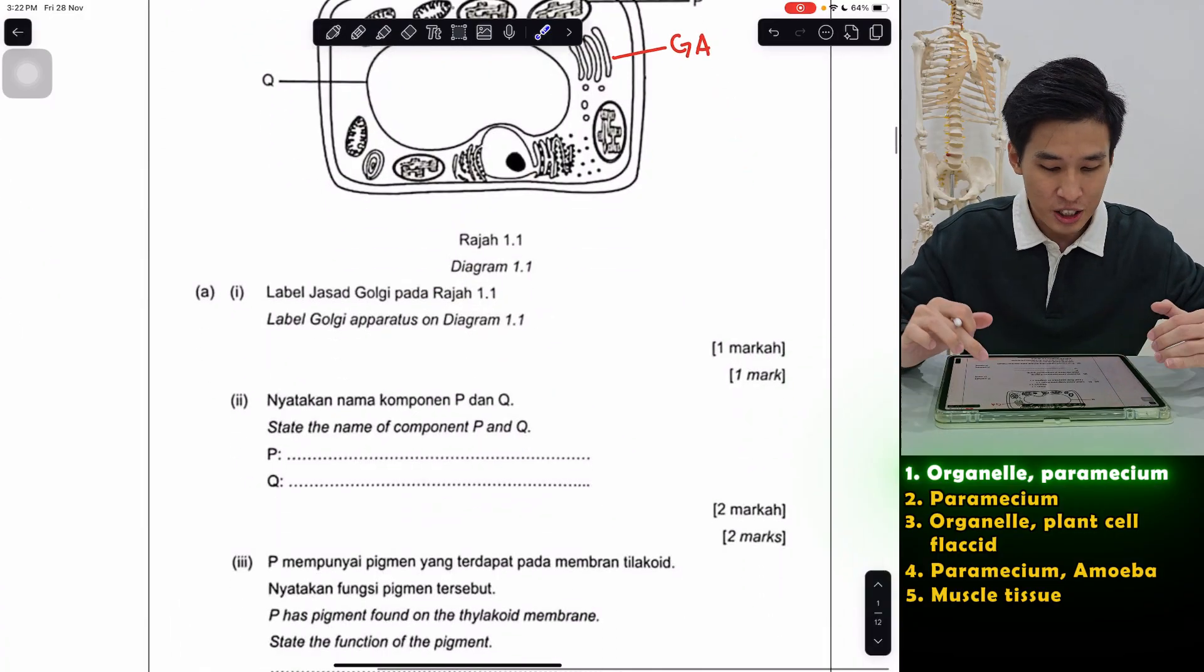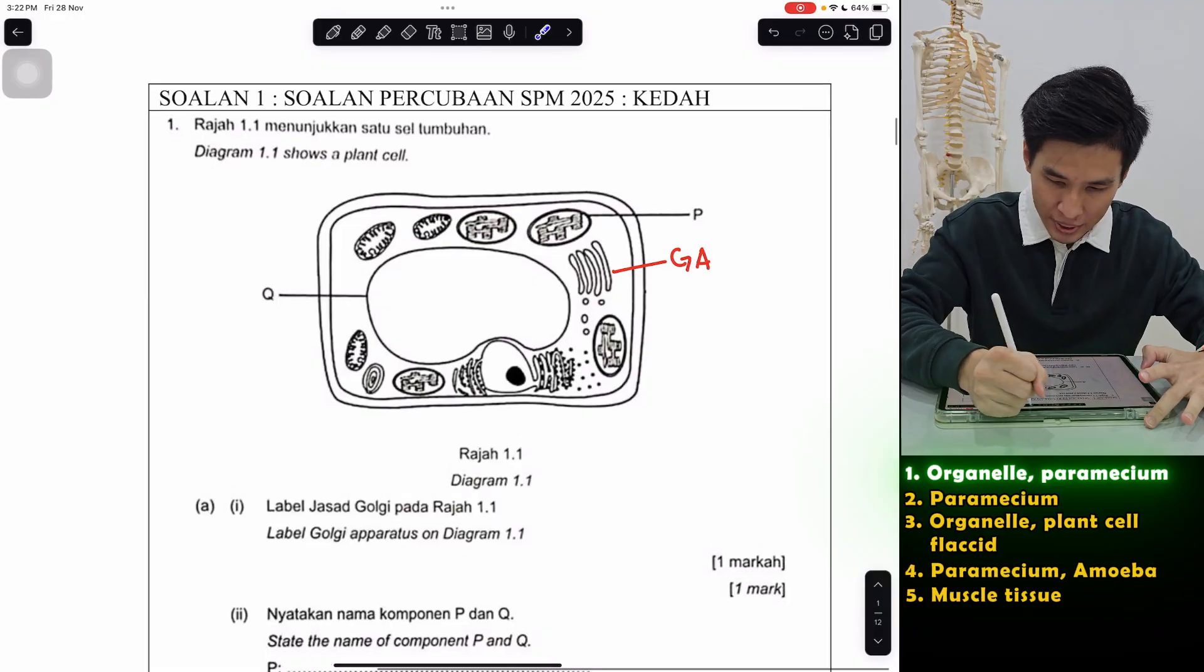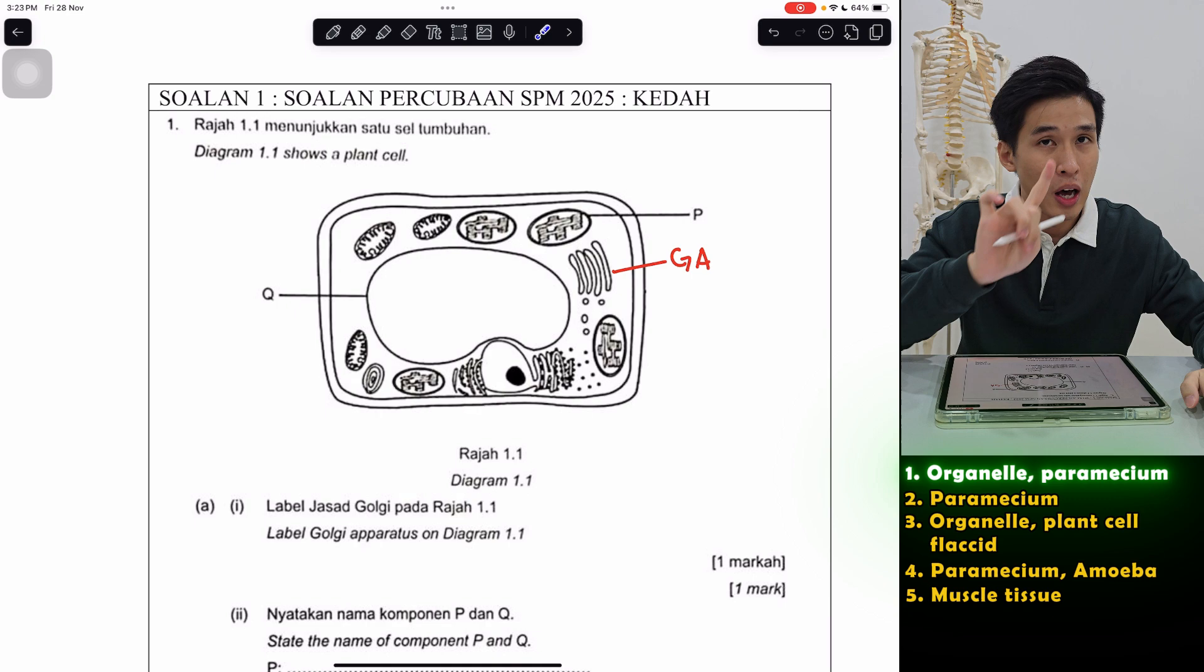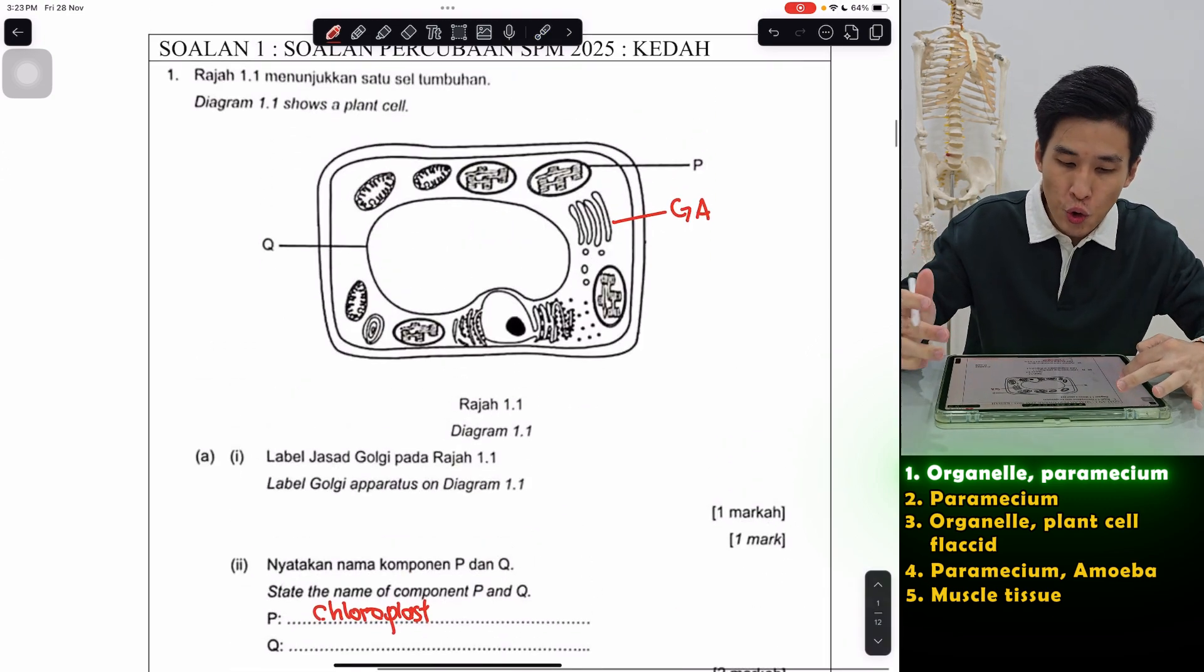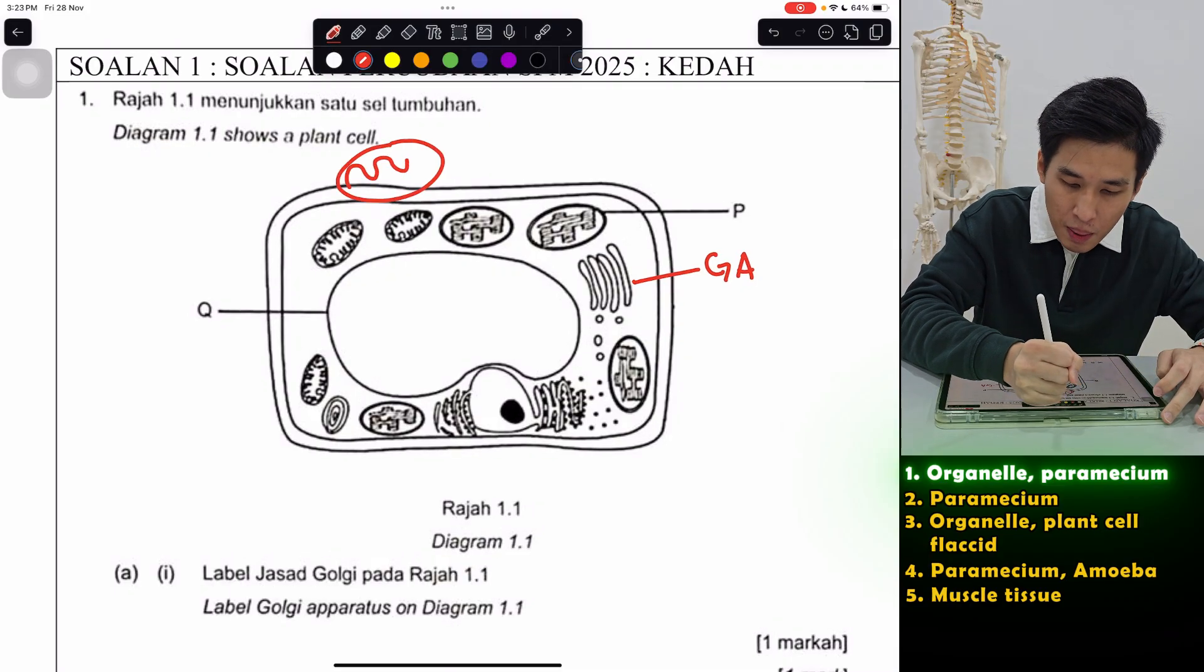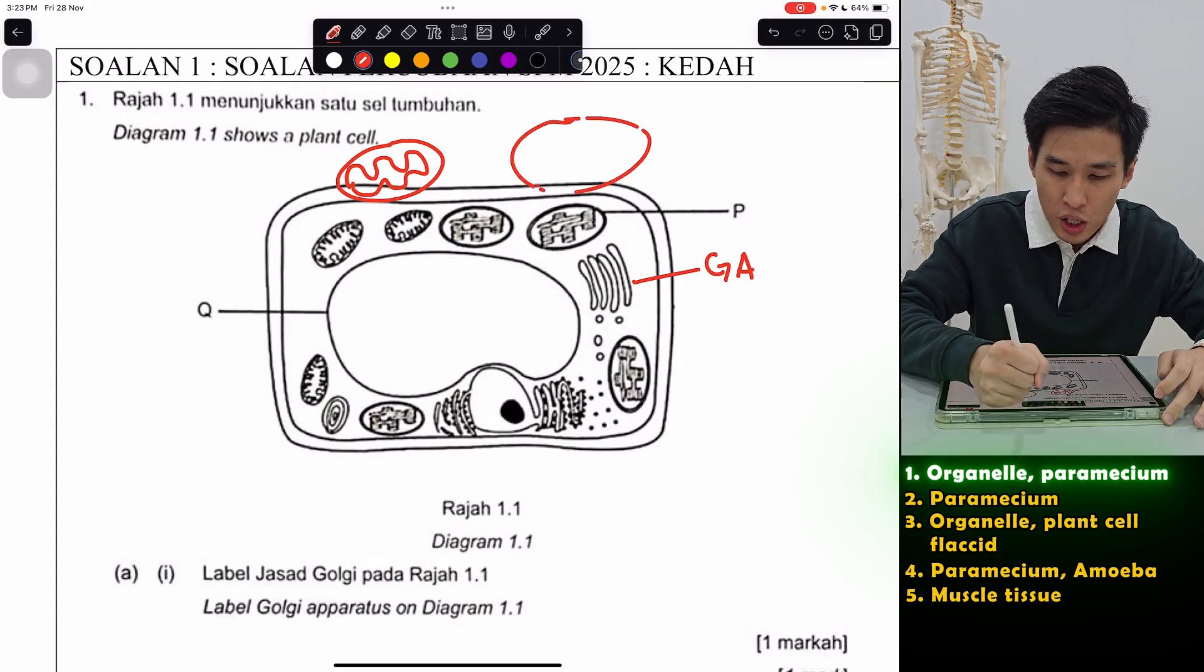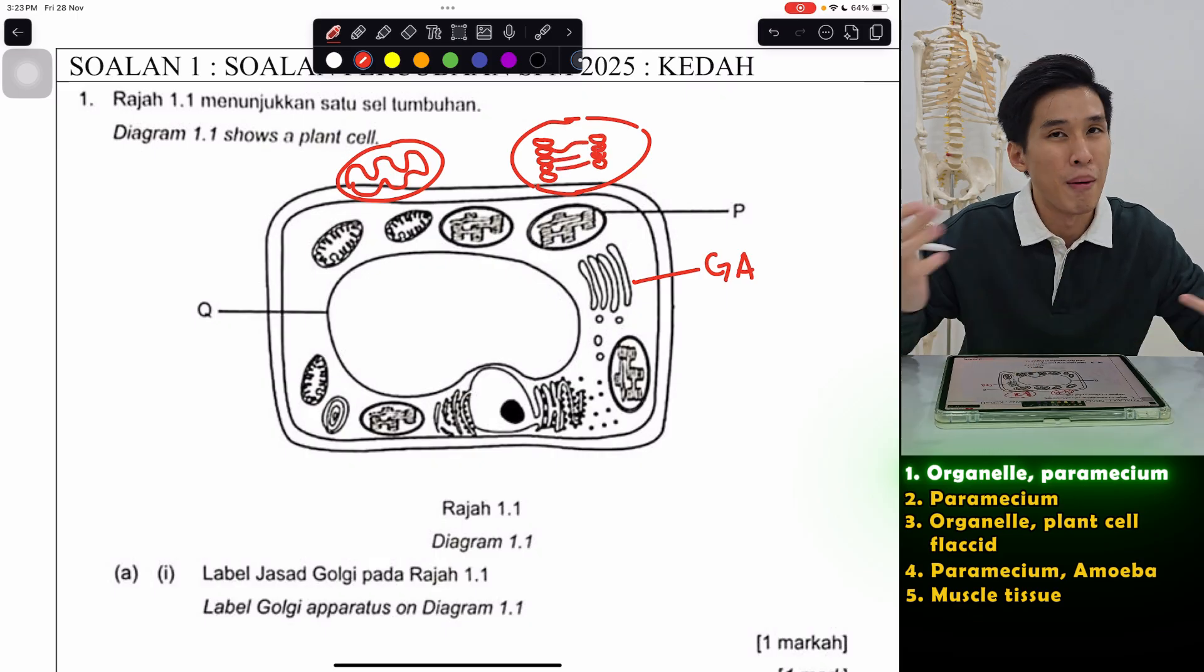Next, state the name of component P and Q. P is obviously your chloroplast. Now chloroplast and mitochondria, very different. So for mitochondria, inside is a folded membrane like this. But for chloroplast, you will see your stack of thylakoid joined to each other like that.